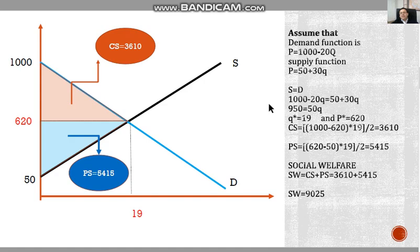We are given demand and supply functions, and solving for Q, the equilibrium level of quantity is 19 and equilibrium price is 620. Using the basic formula base times height divided by 2, we can calculate consumer surplus and producer surplus. The sum of consumer and producer surplus is 9,025.